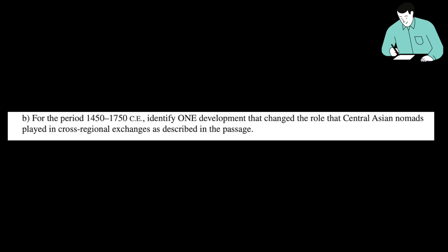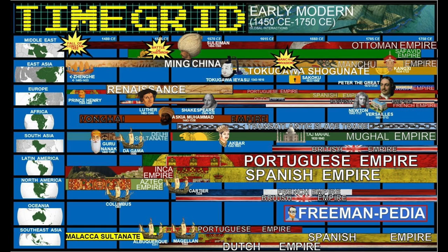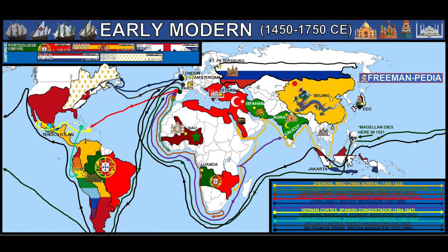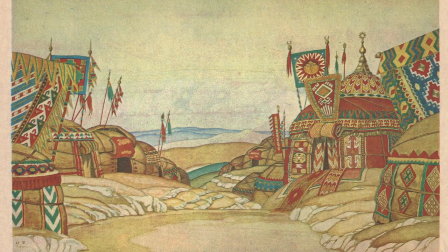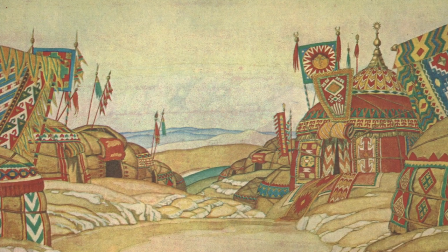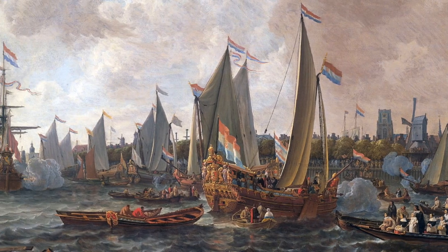For letter B, now we're getting something specific: something that changed the role Central Asian nomads played in these exchanges. They're asking you 1450 to 1750. Dates don't matter, but chronology and periodization matter. In AP World that's units three and four. The biggest change in this period is the trans-oceanic reconnaissance of the Europeans — Columbus and friends. The Central Asian trade routes and the nomads there really aren't the only game in town anymore, and the maritime trade routes end up taking over the Silk Road's importance. That changed the role of Central Asian nomads in spreading culture.